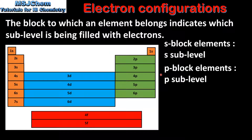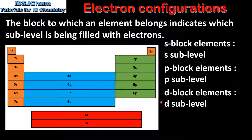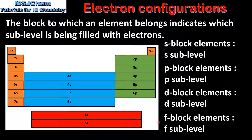For the P block elements the P sublevel is being filled with electrons. These electrons could be filling any of the P sublevels from 2 up to 6. For D block elements it's the D sublevel that's being filled, covering sublevels from 3 to 6. And for the F block elements it's the F sublevel being filled, either the 4f or the 5f sublevel.